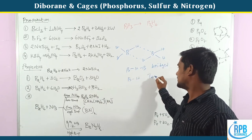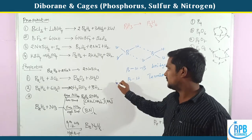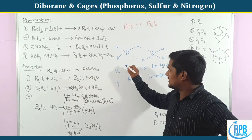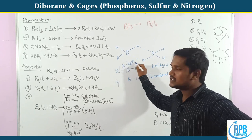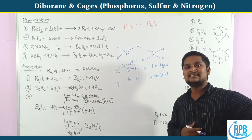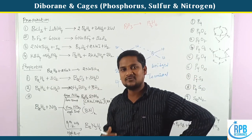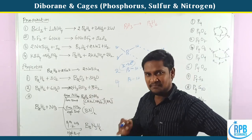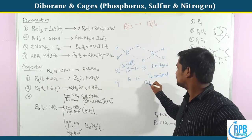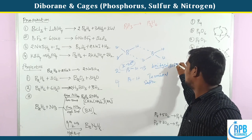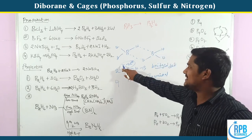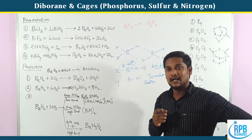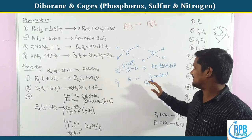The BH terminal bonds — four terminal bonds total — are called sufficient bonds. The bridged bonds are called deficient bonds. These bridged bonds are three-centered but have only two electrons, not three. That's why they are called banana bonds or deficient bonds, while terminal bonds are sufficient bonds.